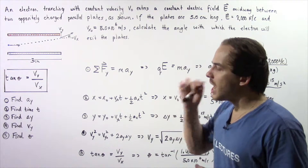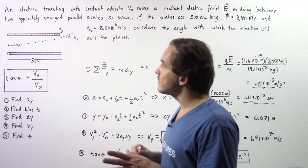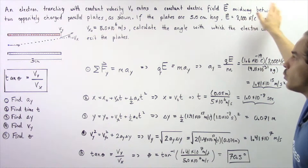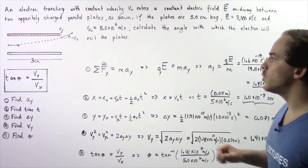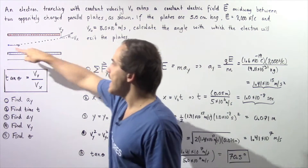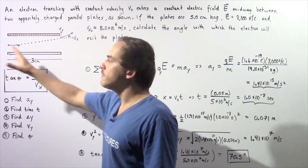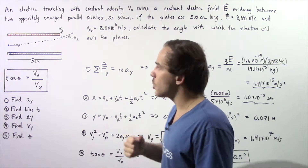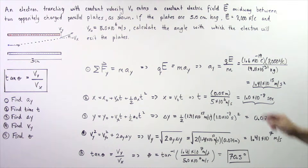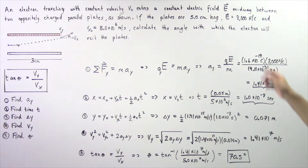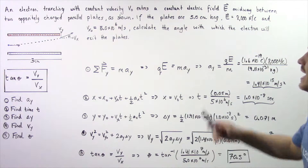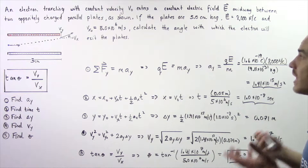Let's continue solving examples on electric fields. Suppose an electron traveling with a constant velocity V-naught enters a constant electric field E midway between two oppositely charged parallel plates. If the plates are 5 centimeters long, the electric field is 8,000 newtons per coulomb, and the initial velocity along the x-axis is 5 times 10 to the 6 meters per second, calculate the angle with which the electron will exit the plates.